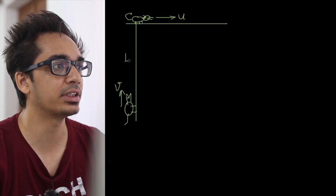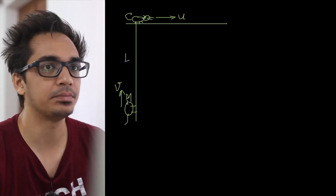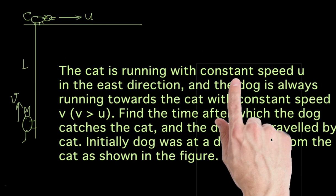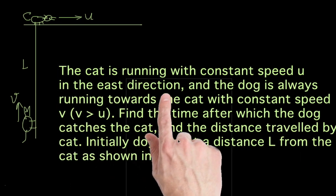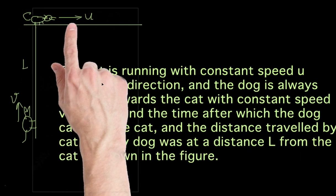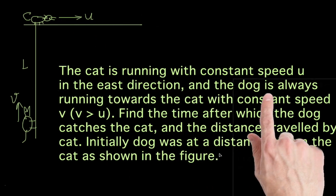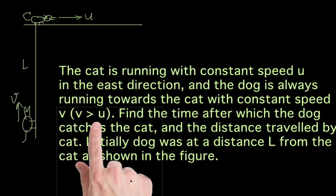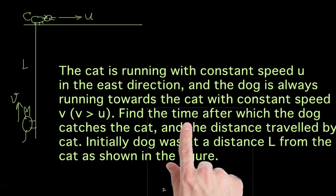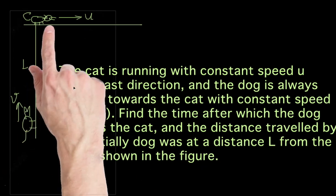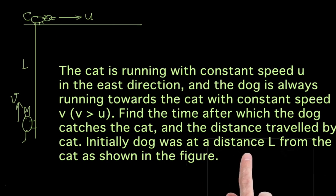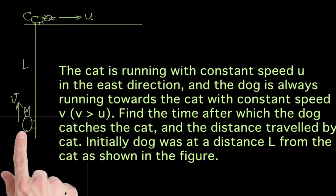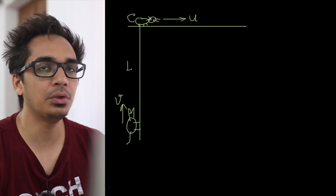The initial distance between them is l. So, given: the cat is running with constant speed u in the east direction, and the dog is always running towards the cat. Find the time after which the dog catches the cat.